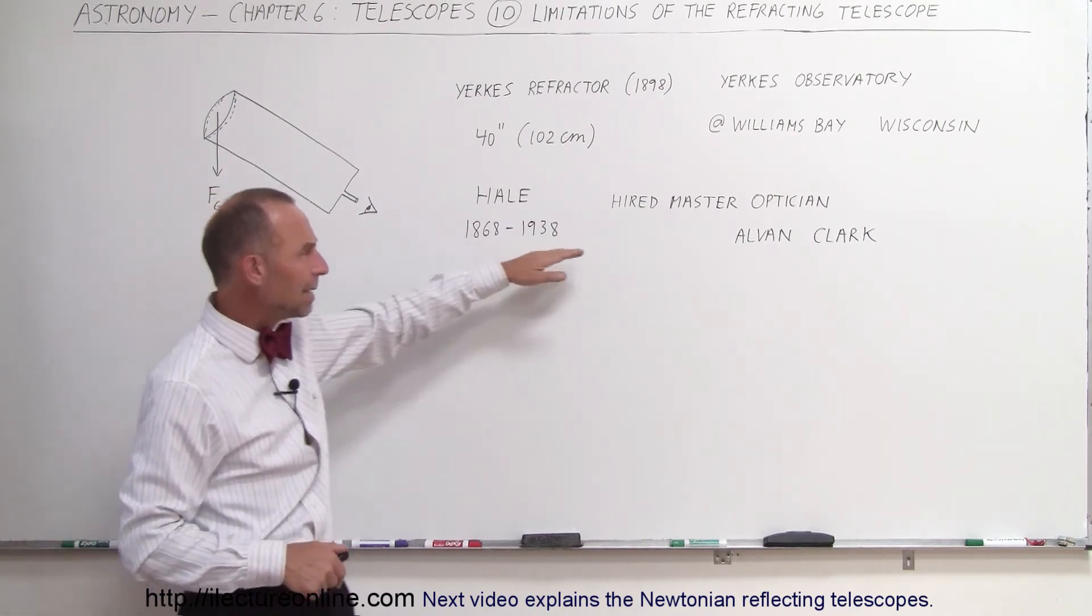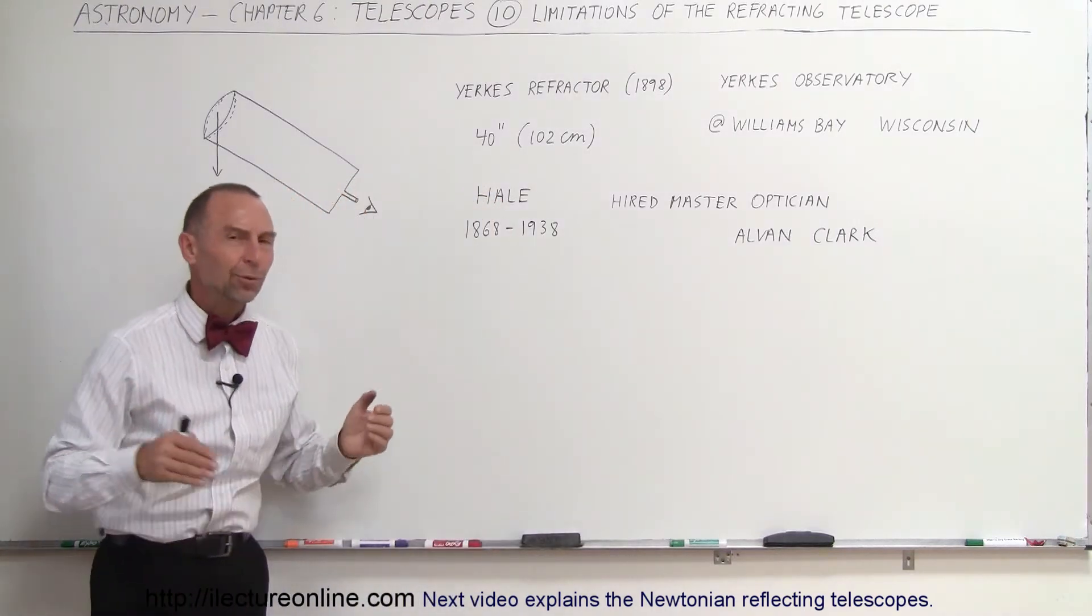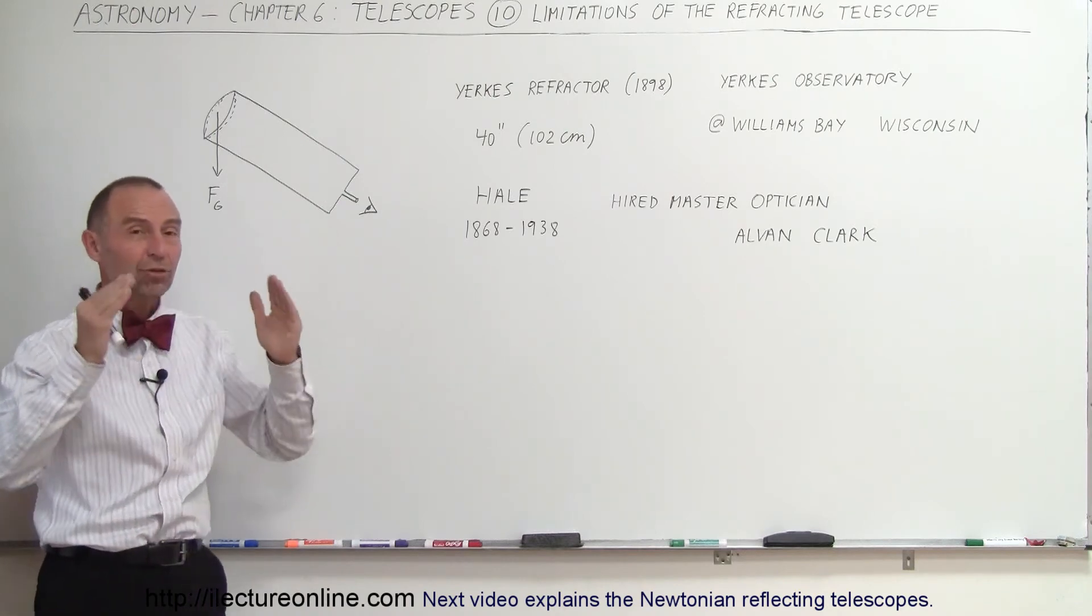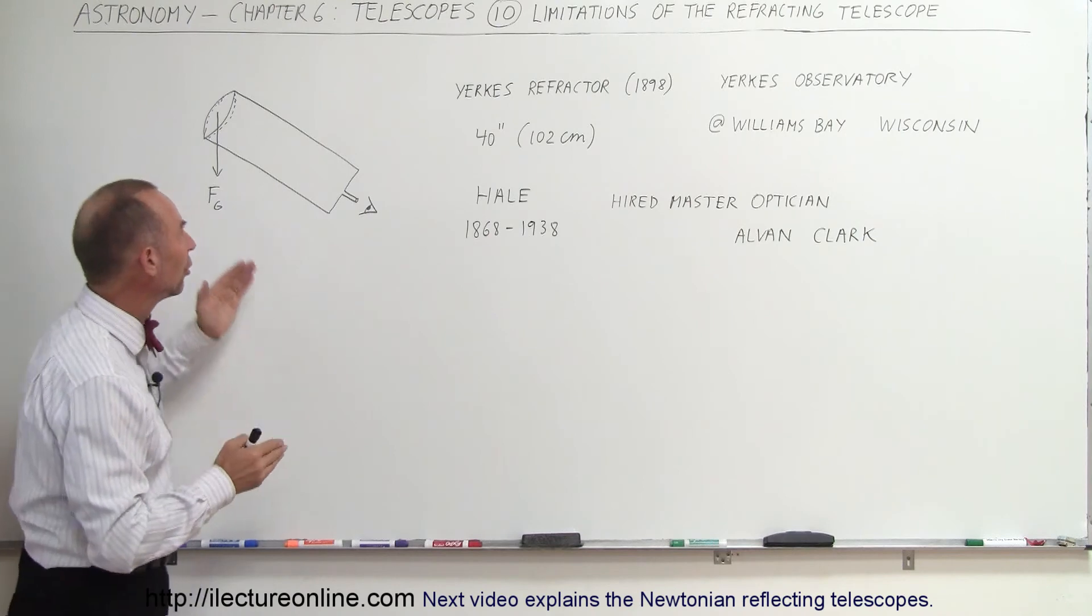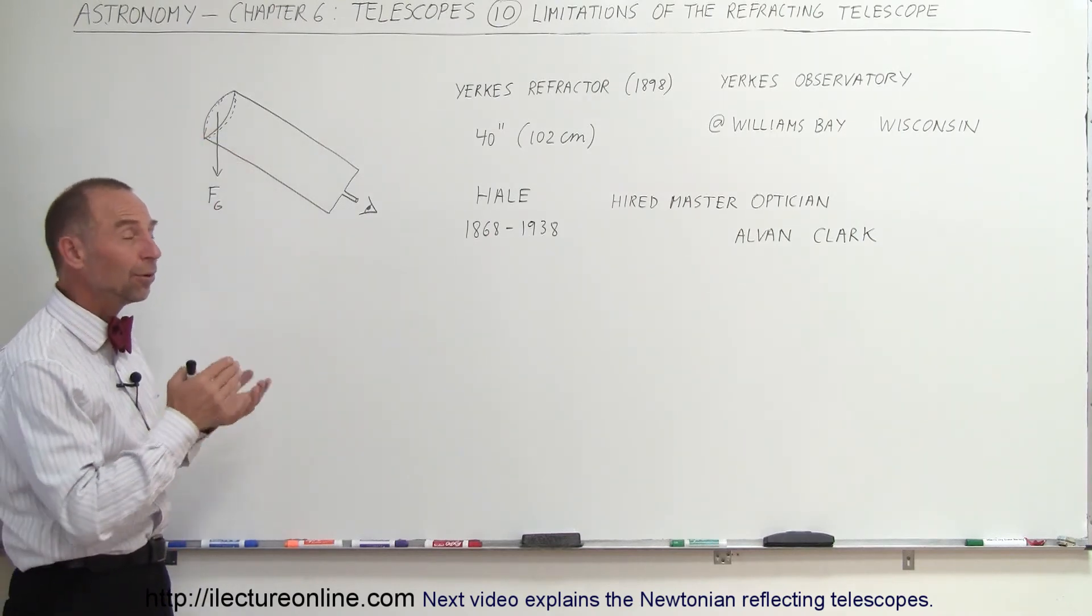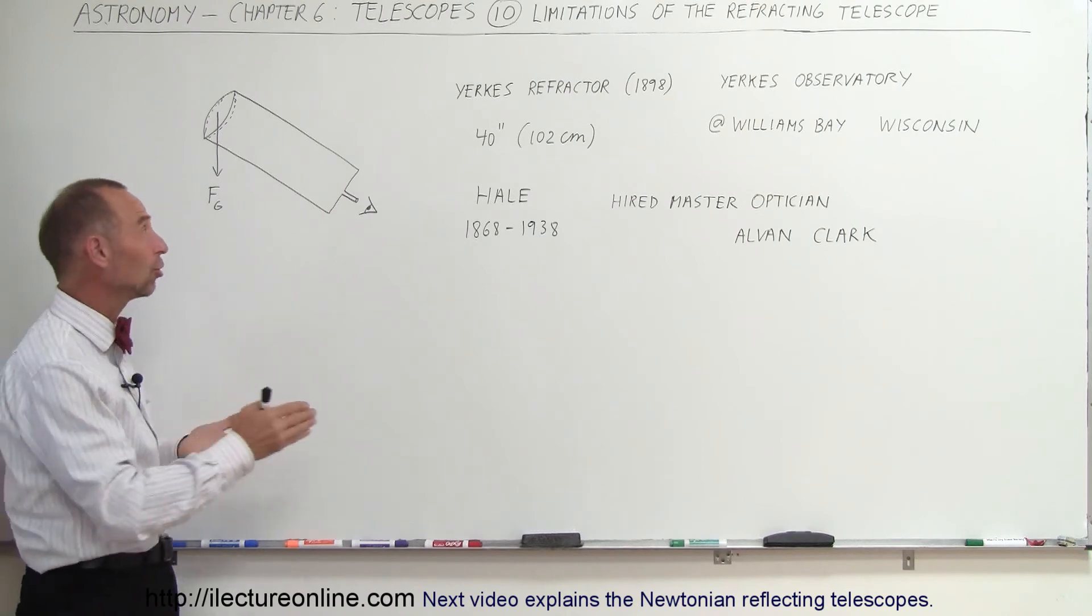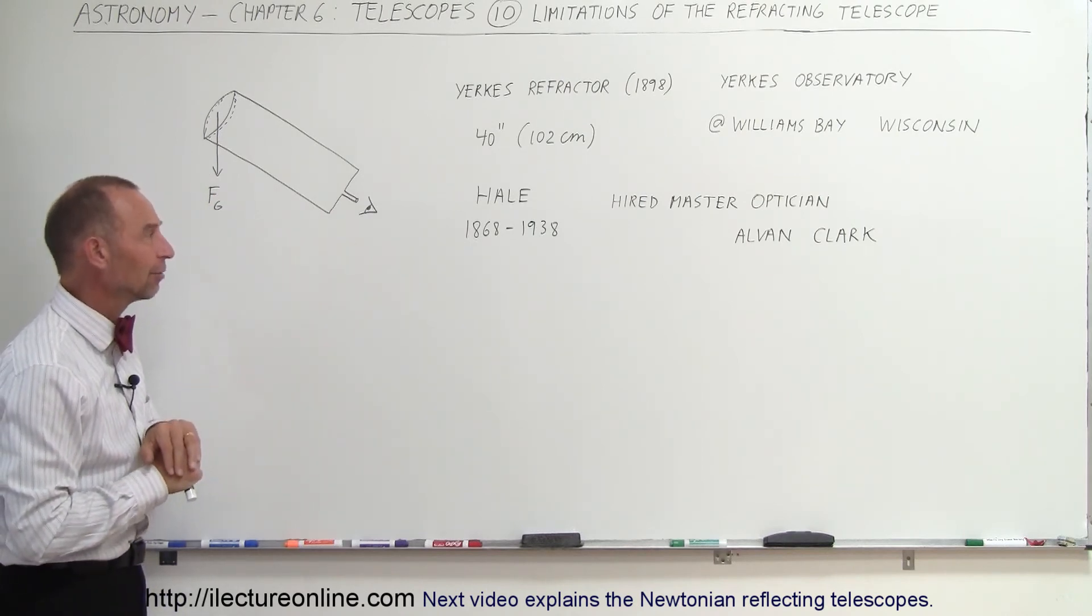He hired someone named Alvin Clark, who was a master optician. He was really able to take a lens that big and shape it just perfectly in the parabolic shape that it needs to be in order to cause that lens to act the way it needs to act. So there was a lot of craftsmanship that used to go into being able to build these kinds of lenses.